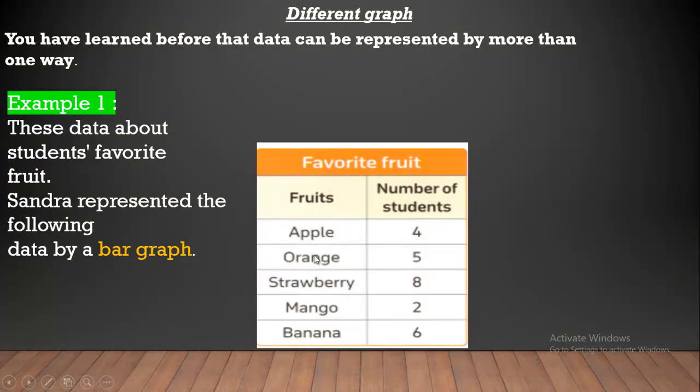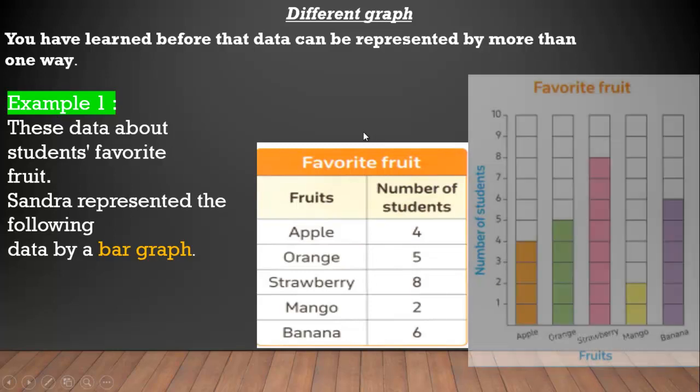It's represented the following data by a bar graph. First, we have fruits: apple, orange, strawberry, mango, and banana. Number of students like apple 4, orange 5, strawberry 8, mango 2, banana 6.